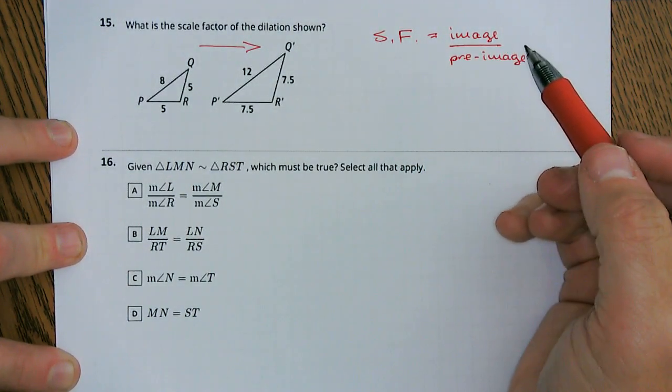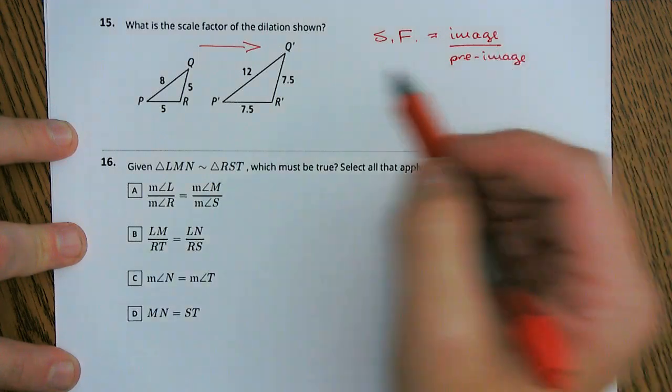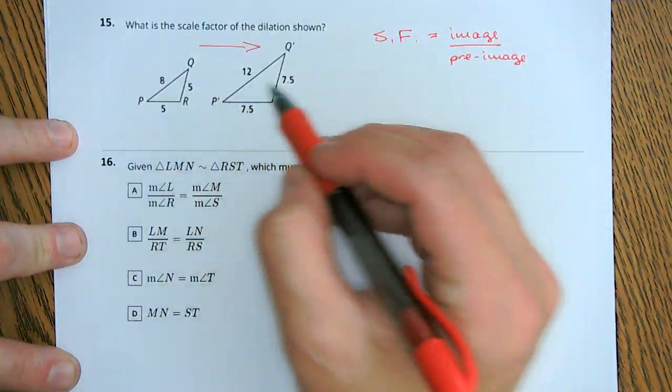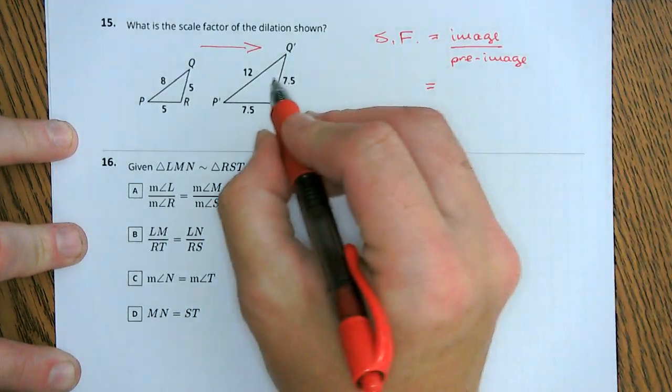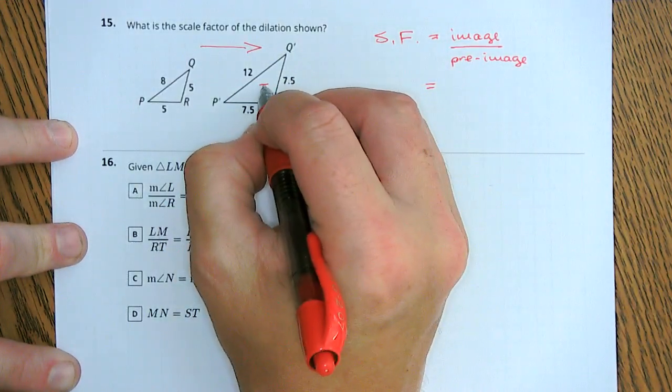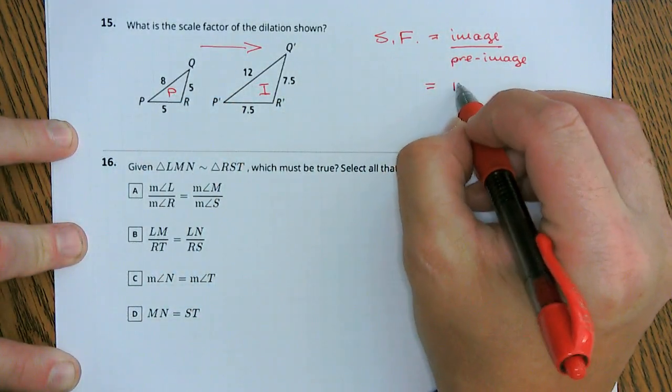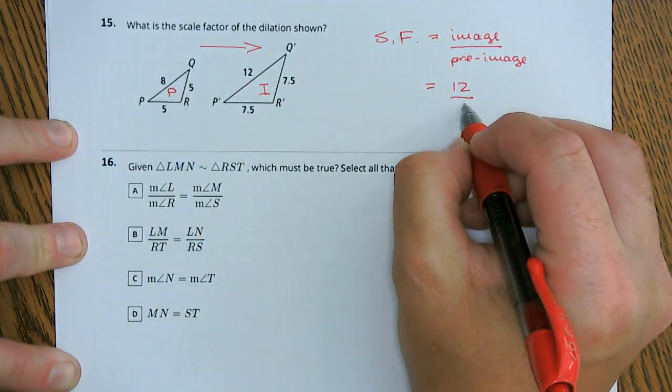Now in this case we can pick some corresponding sides. I'm going to pick p, q, and p prime, q prime, in which case our p prime, q prime, this is our image, versus our pre-image, we have a 12 that we're dividing by 8.